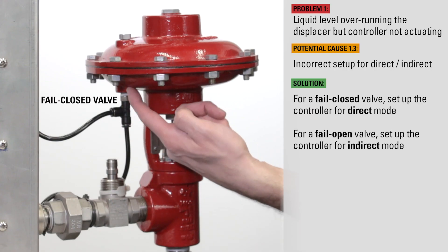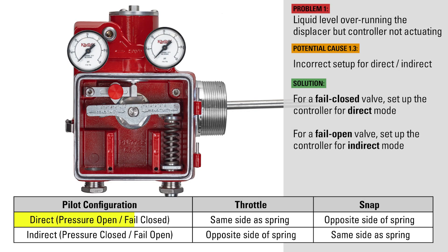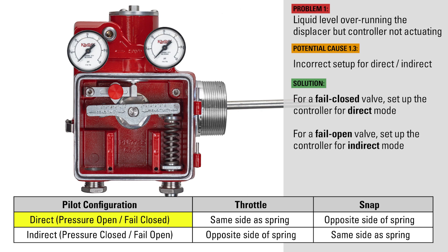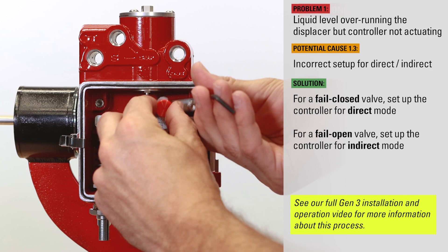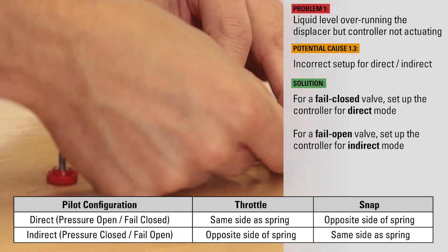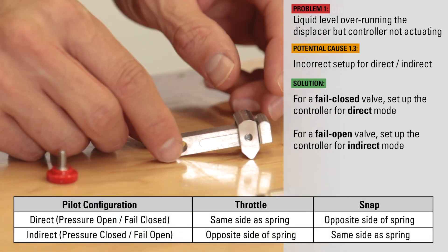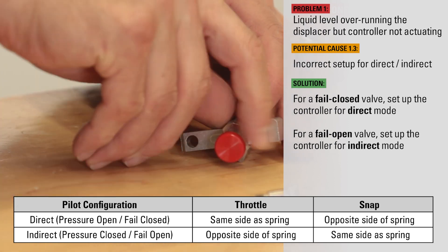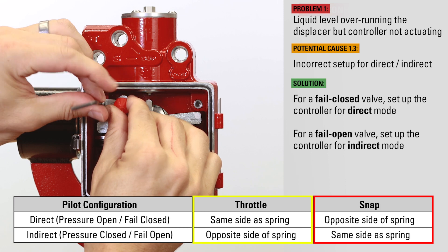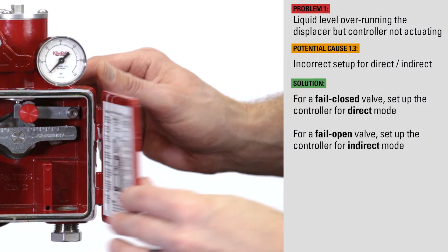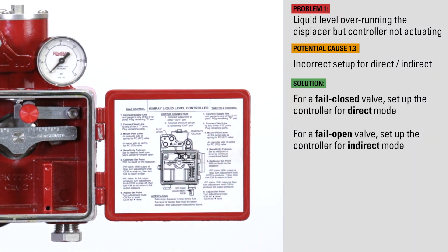For a fail closed valve, the level controller should be set up in direct mode, and for a fail open valve, indirect mode. If set up incorrectly, the controller will not actuate the way you want it to. Just move the pilot lever from one side to the other. This chart found in the installation, operation, and maintenance manual is an easy reference for which side the pilot lever should go on when in snap or in throttle. For your convenience, this information is also given on the inside of the Gen 3 cover.